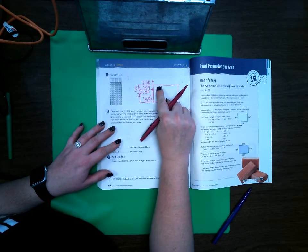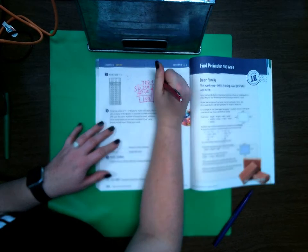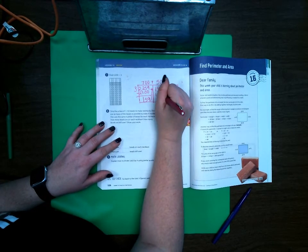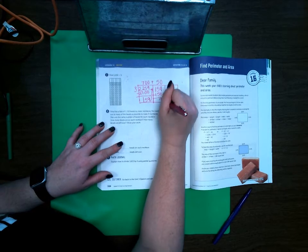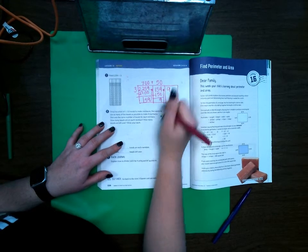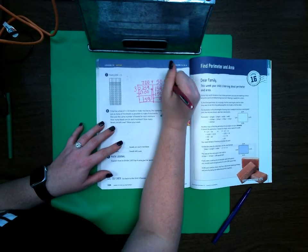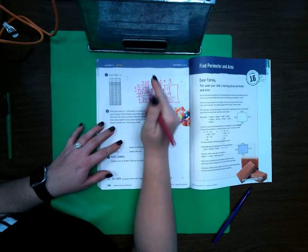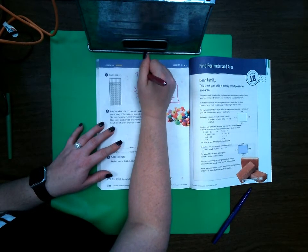3 cannot go into 1, but it can go into 15 five times. I'm going to add one more zero. So 159 minus 150 leaves 9 left over. Move that up. 3 times 3 is 9 with nothing remaining. So my answer is 753.